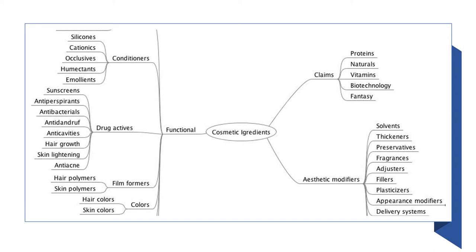Since thickeners are incorporated in a number of coloring agents like hair colors, skin colors, hair polymers, and skin polymers, they find wide applicability. In cosmetics specifically, they are used in the formulation of sunscreens, antiperspirants, antibacterials, anti-dandruff agents, anti-cavity products, skin lightening creams, and anti-acne treatments. Apart from that, they function in conditioning activities and building block activities such as silicones, cationic agents, occlusives, humectants, and emollients.